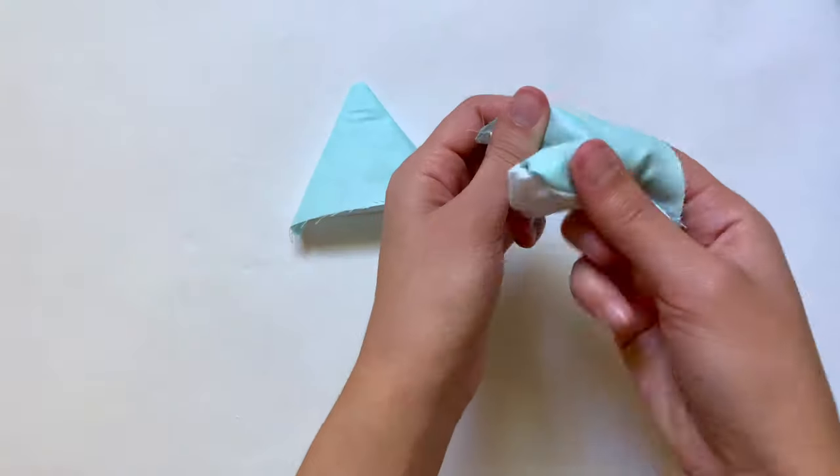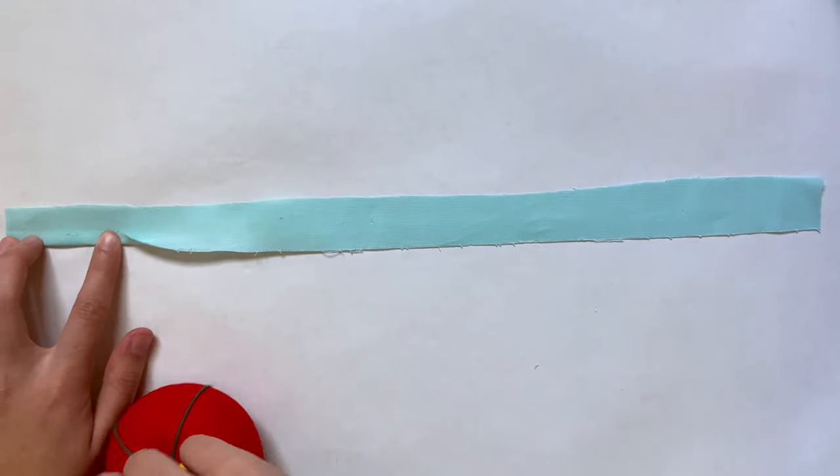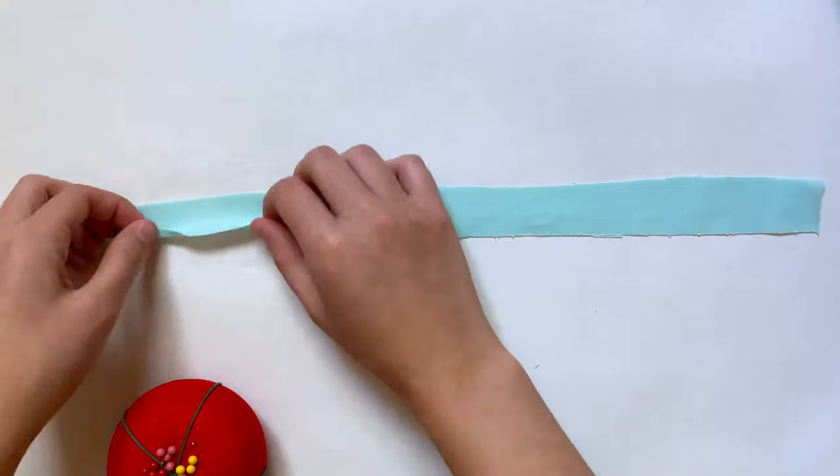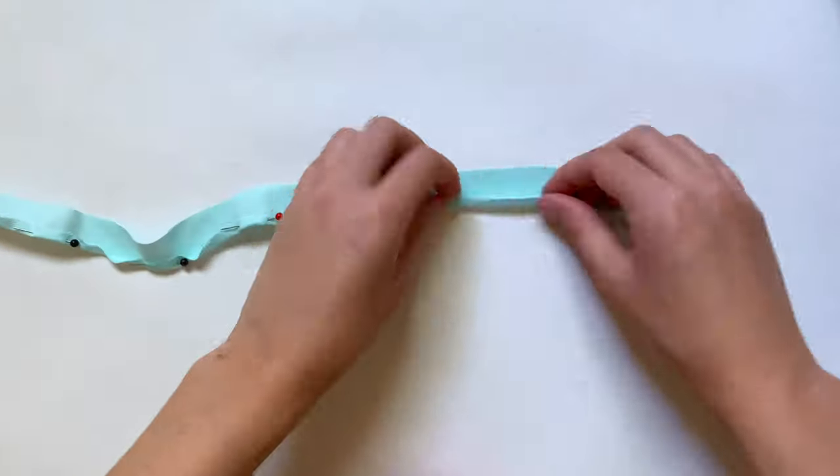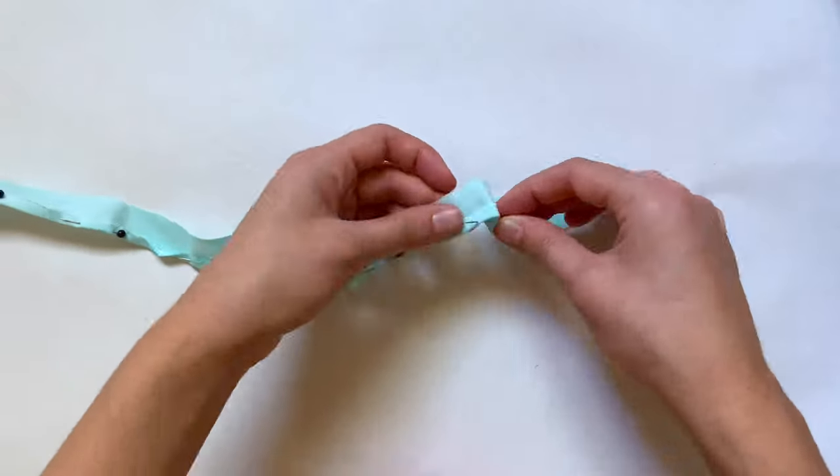We can just set these aside and move on to that bottom band. This is that very long rectangle piece, and the first thing I'm gonna do is hem one of the sides. With the bad side facing up, I'm going to fold over the bottom edge and then just pin all along the entire thing. I'm gonna use a straight stitch to sew this all down.